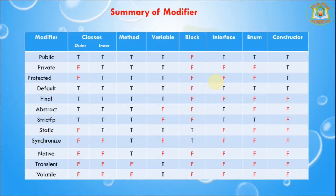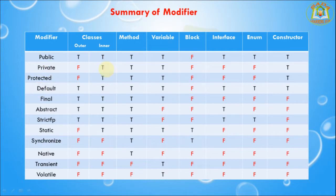Next I am going to discuss about a summary of modifiers. Public is applicable at the class level for outer classes as well as inner classes, and is accessible at method level, variable level, interface level, enum level, and constructor level. Private is accessible only for inner classes, method level, variable level, and constructor level.